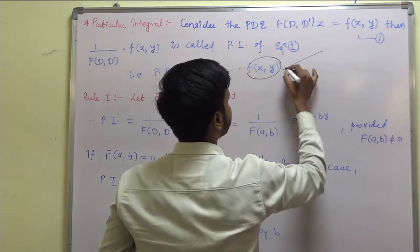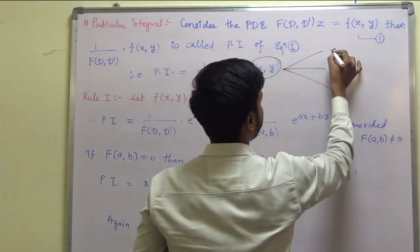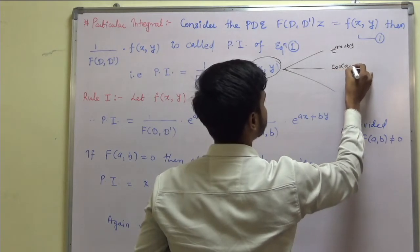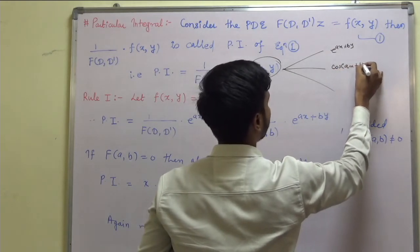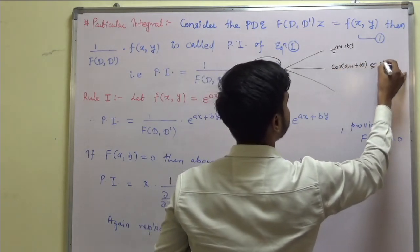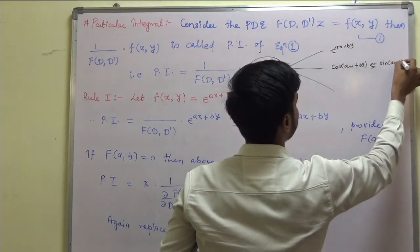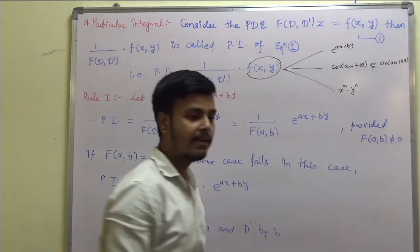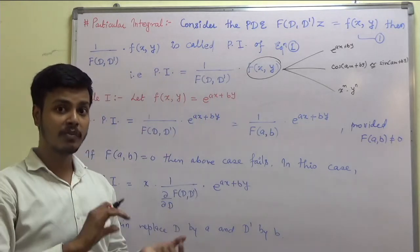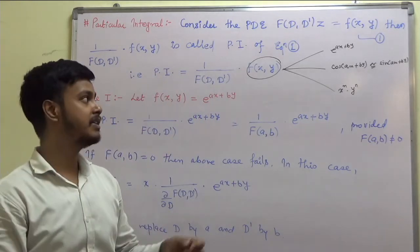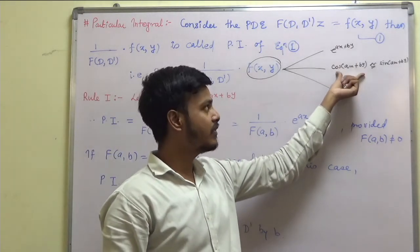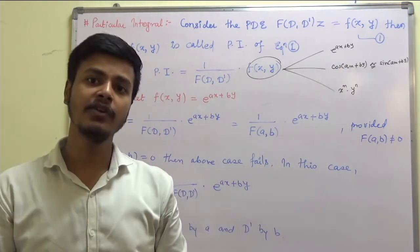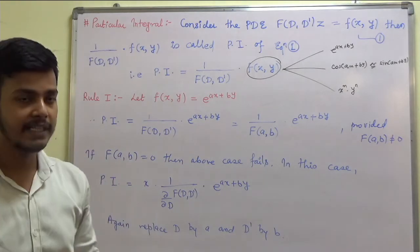The function f(x, y) may be e to the power ax + by. It may be cos(ax + by) or sin(ax + by). It may be x^m times y^n, or it may be e^(ax+by) multiplied by any one of these. These are the different rules we have for the particular integral.